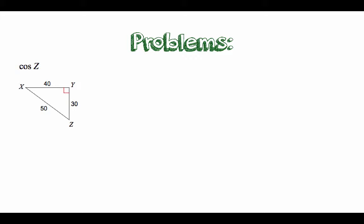So here's a similar problem. Let's look at the cosine of Z here. All right, so here's our angle Z and we need the cosine. Cosine is going to be our adjacent over our hypotenuse.